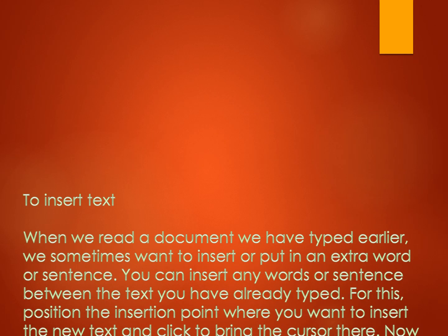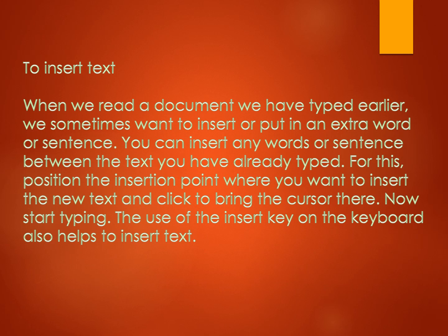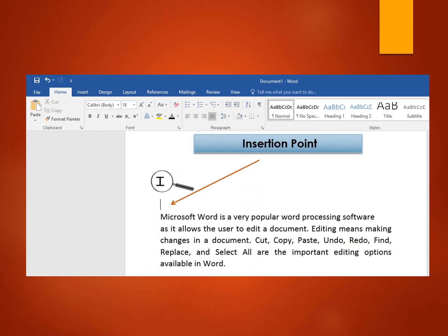Now we shall learn how to insert text. When we read a document we have typed earlier, we sometimes want to insert an extra word or sentence. You can insert any words or sentence between text you have already typed. To do this, position the insertion point where you want to insert the new text and click to bring the cursor there, then start typing. The Insert key on the keyboard also helps to insert text. The cursor is called the insertion point, as you can see in the image.